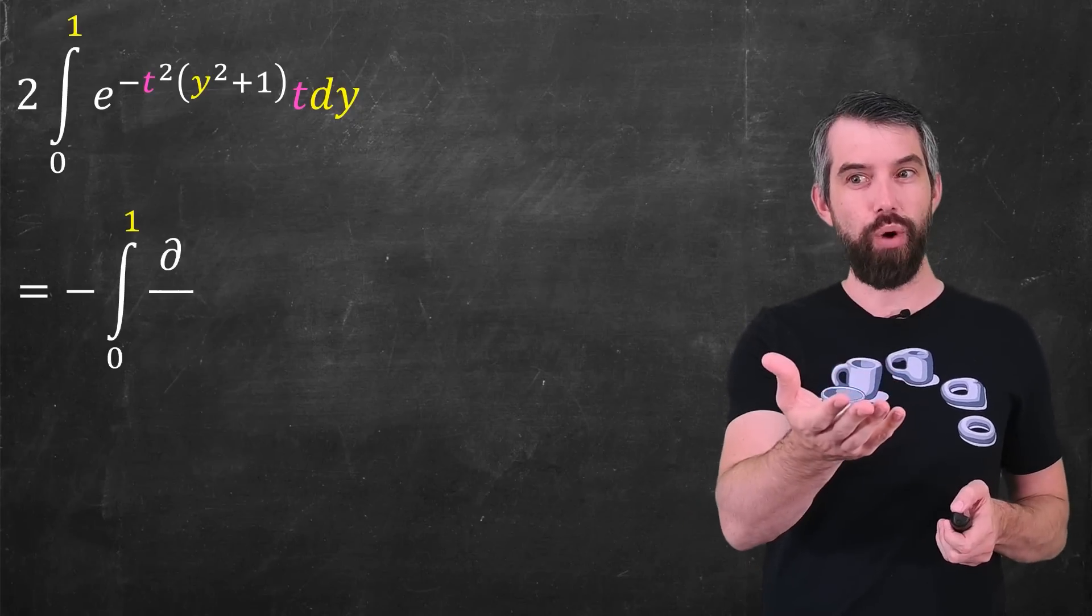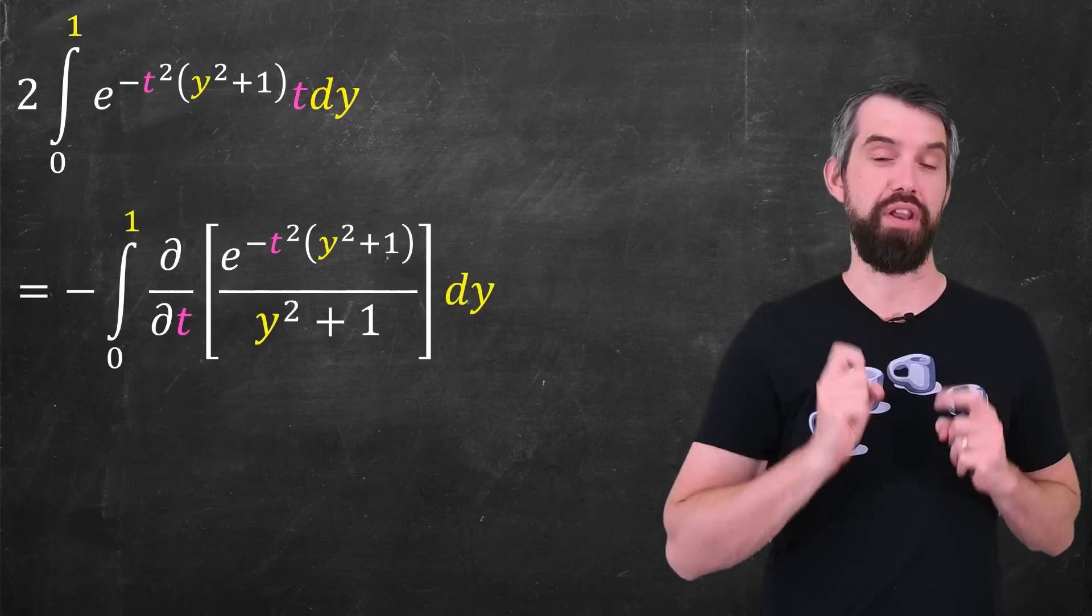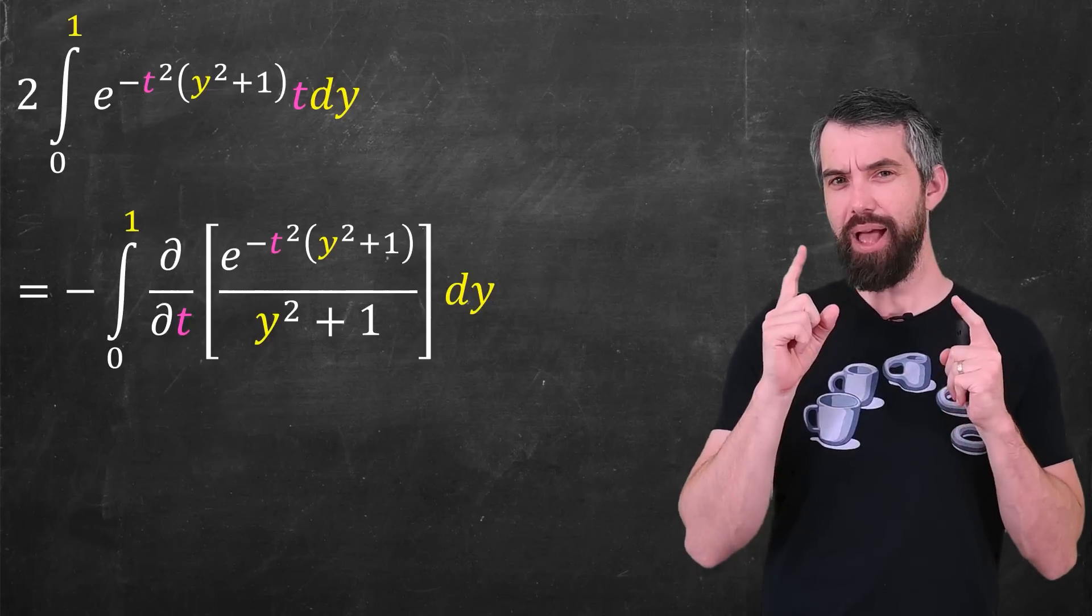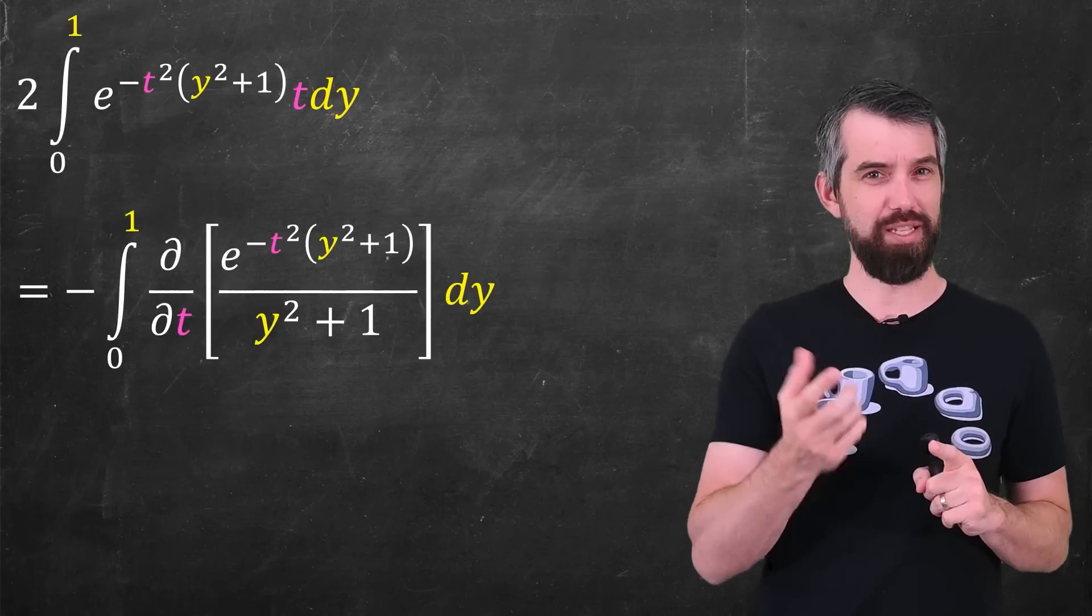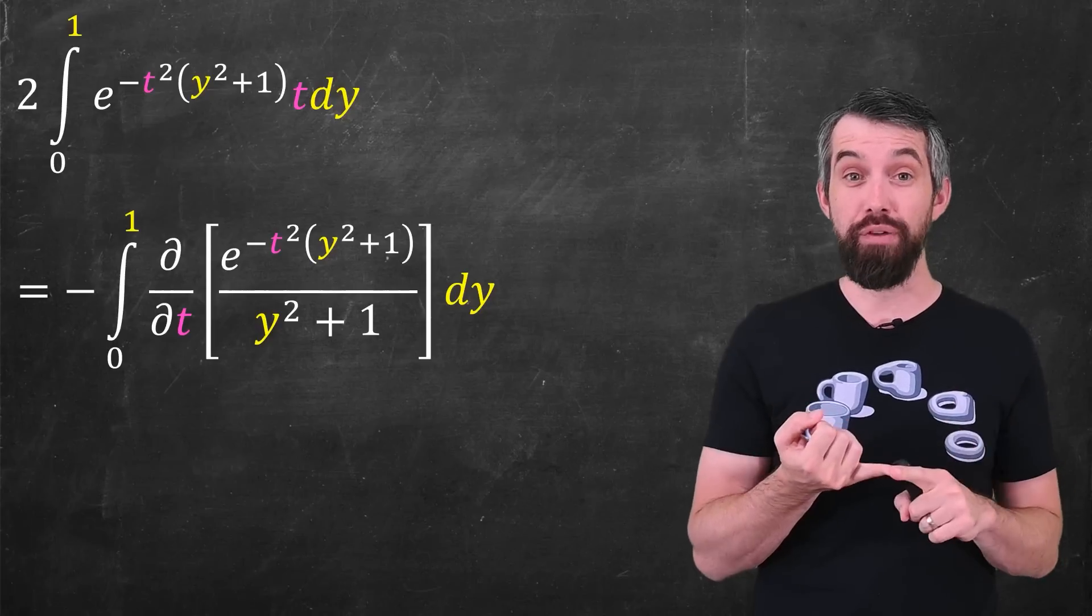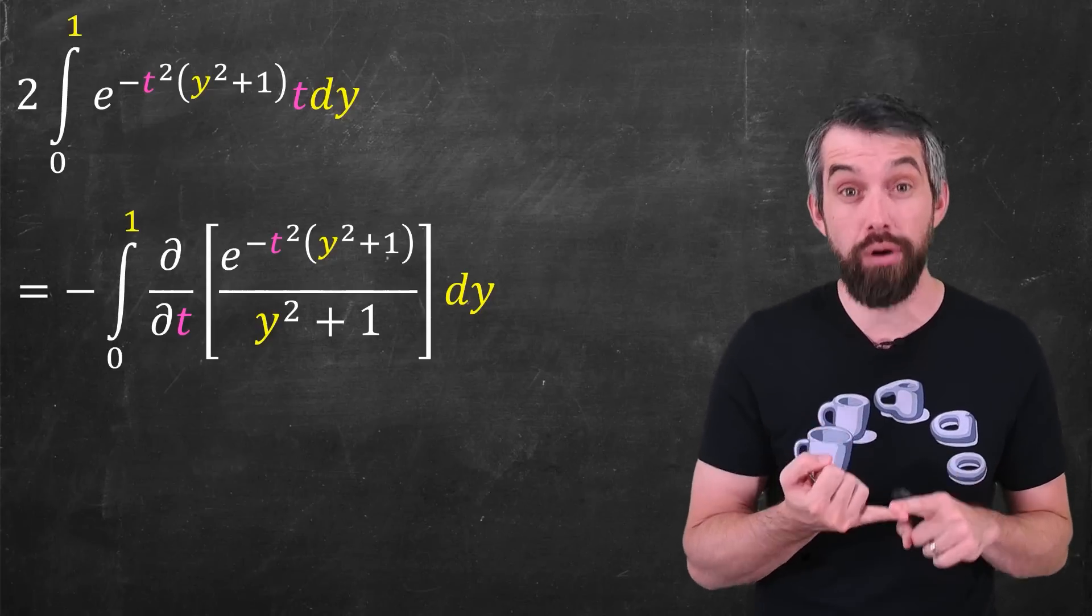Is that I could rewrite this as a derivative. That is, an integral from 0 to 1, and it's a partial derivative because my integral has t and y in it. So I'm observing that it's a derivative with respect to t. So I write the partial derivative with respect to t.